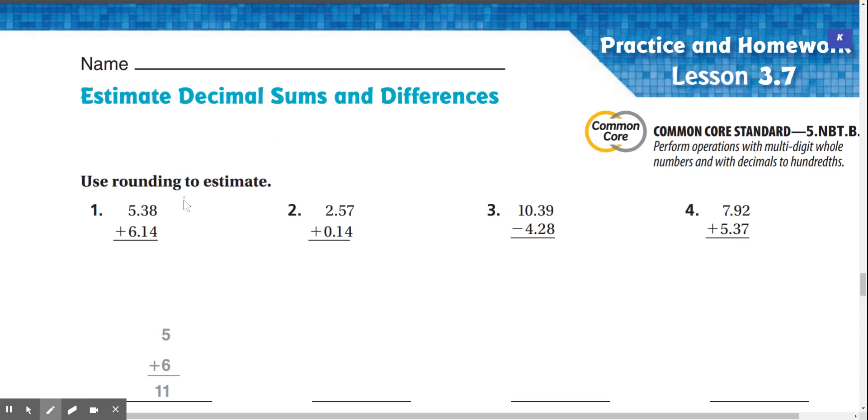Number one, 5.38 plus 6.14. Well, we round 5.38, that's going to round to 5, and 6.14 is going to round to 6. Now if we add 5 plus 6, that's going to give us 11.